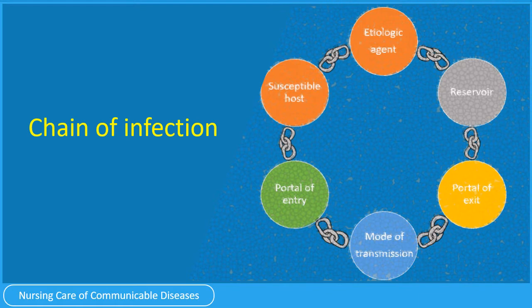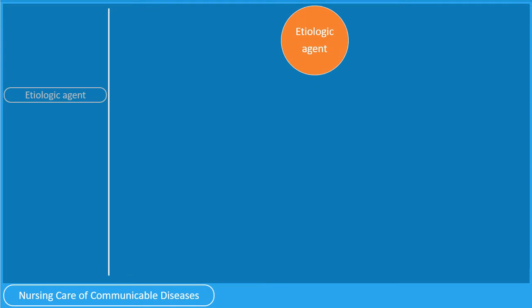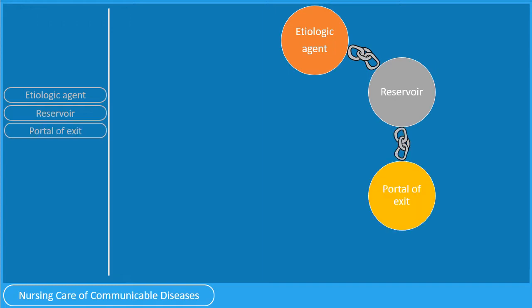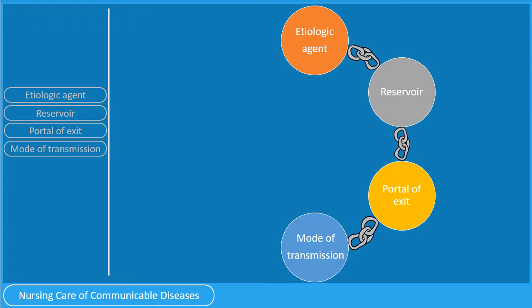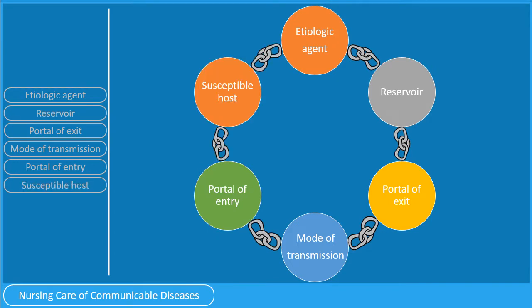Pause this video, memorize the sequence as seen in this slide, and when you are ready, let us enumerate the six links in the sequence. The first is the etiologic agent or the organism, followed by the reservoir, then the portal of exit from the reservoir. This is followed by the mode of transmission, a portal of entry into a host, and to complete the chain of infection, the susceptible host.